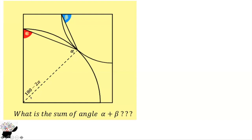Automatically this angle is 90 degrees, so this angle becomes 2 alpha minus 90. Why? Because when we add them together we should get 90. Let's verify: 180 minus 2 alpha plus 2 alpha minus 90 — the 2 alpha terms cancel, and we get 180 minus 90, which is 90. Correct.